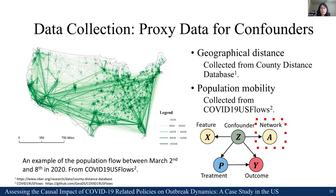Previous works have shown that network structure among different units can often reflect some unobserved confounders. Therefore, in this work we also use two kinds of networks, including the geographical distance network and mobility flow network among the selected counties. By intuition, counties with shorter distances or larger amounts of mobility flows may have more similar confounders.